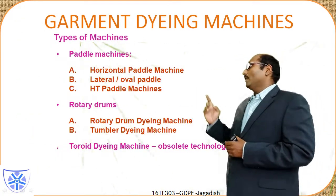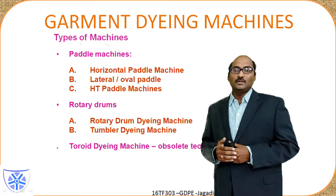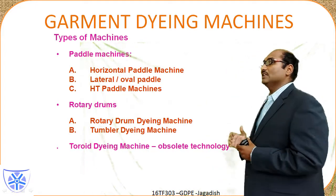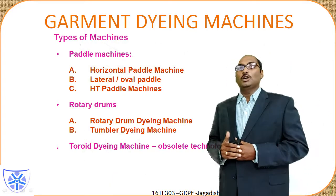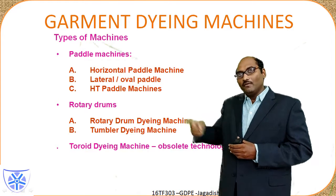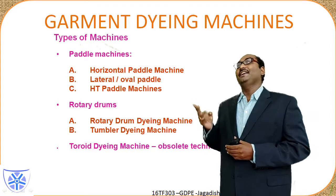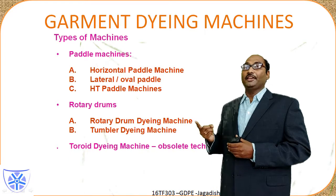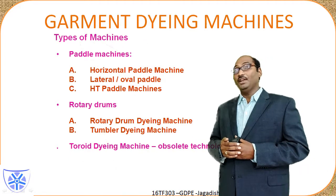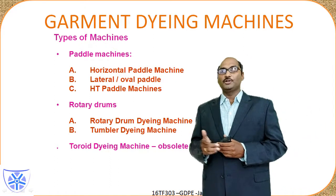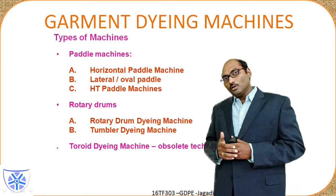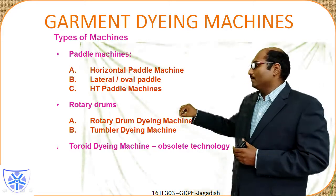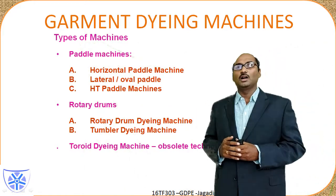Paddle machines consist of three sub-types: one is horizontal paddle, second is lateral or oval type, and the third is high temperature paddle machines. Rotary drum machines include the rotary drum machine and the tumble dyeing machine. There are also other techniques such as the Toroid Dyeing Machine, which is now obsolete — some developments occurred from the 1980s to around 2010.